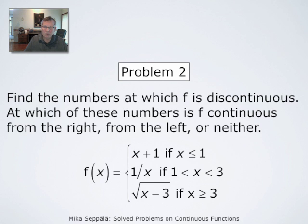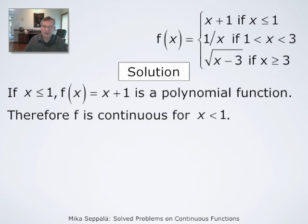In problem 2, we have to figure out the numbers at which f is discontinuous. f is given by x + 1 if x ≤ 1; by 1/x if 1 < x < 3; and by √(x − 3) if x ≥ 3. We also need to determine whether f has left or right limits at the points of discontinuity, or neither.